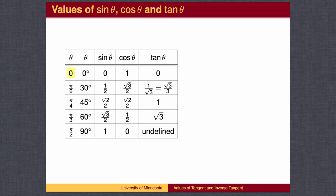To find the tangent of zero, we divide the sine of zero by the cosine of zero. That is, we divide zero by one and get zero. To find the tangent of pi over six, we divide the sine of pi over six by the cosine of pi over six. That is, we divide one half by the square root of three over two. The twos cancel, so we get one over the square root of three, which we can simplify to the square root of three over three.